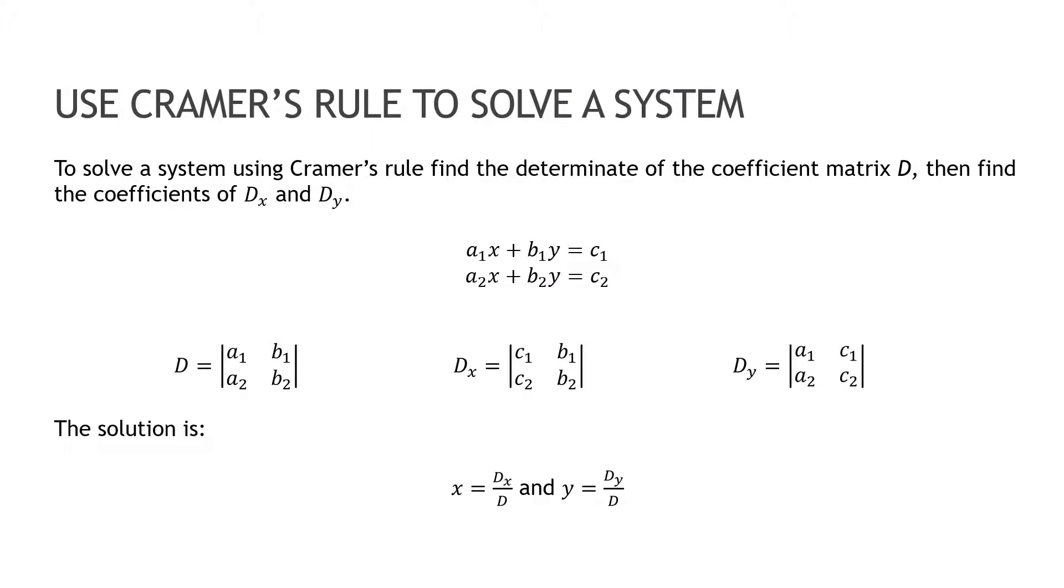Cramer's rule has everything to do with determinants, and essentially, we're basically going to find three determinants. And the way that we find them is we're first going to take just the coefficient matrix, and we're going to find the determinant of that. So just the coefficients like we normally do.